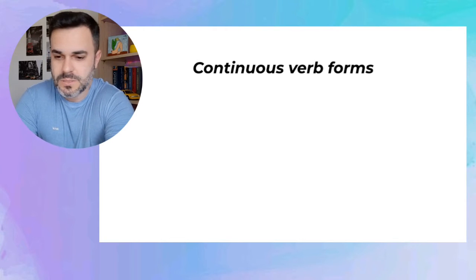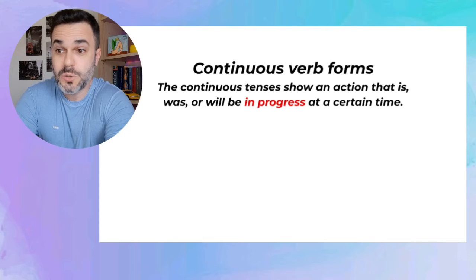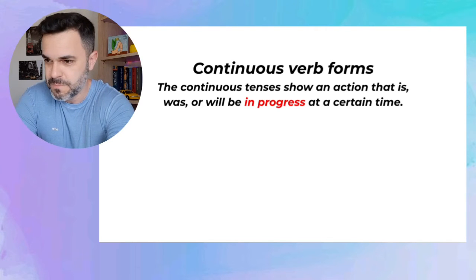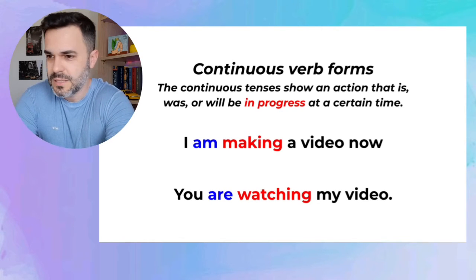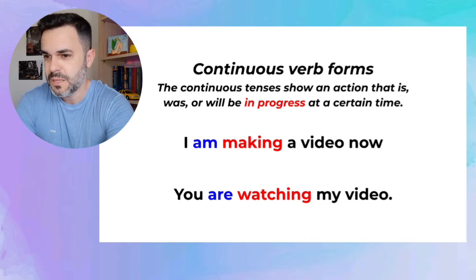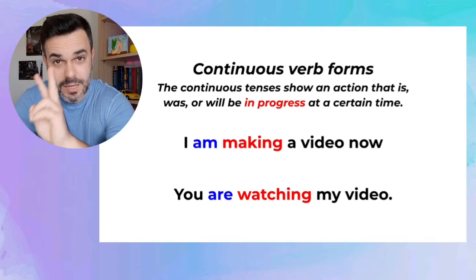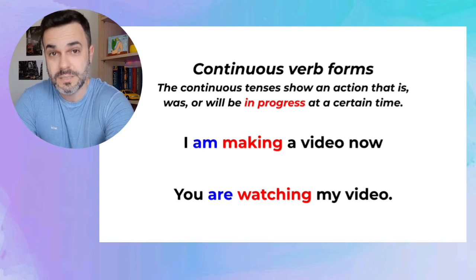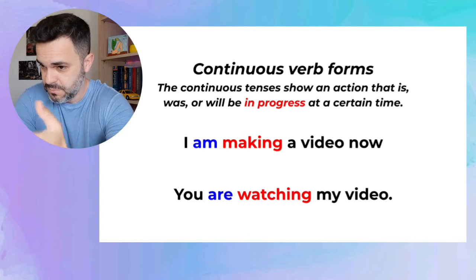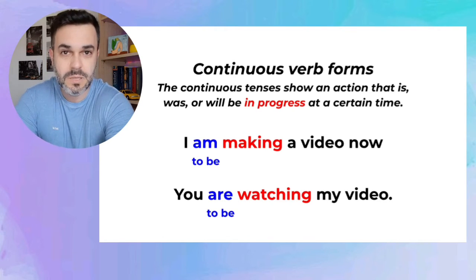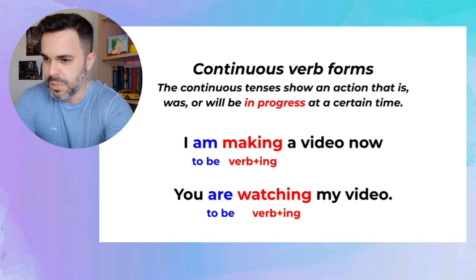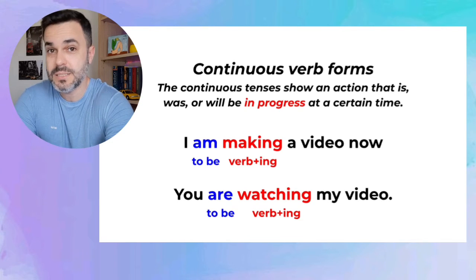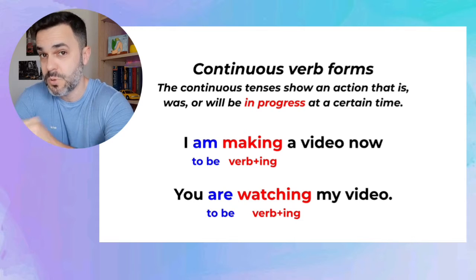Here is step number one: continuous verb forms. The continuous tenses show an action that is, was, or will be in progress at a certain time. Check out these two sentences: I am making a video now. You are watching my video. These two actions are in progress right now. That's why I'm using the present continuous, which is the verb 'to be' in the present tense — am, are — plus verb plus ING. Here: making and watching. This is the present continuous — a present action in progress now.